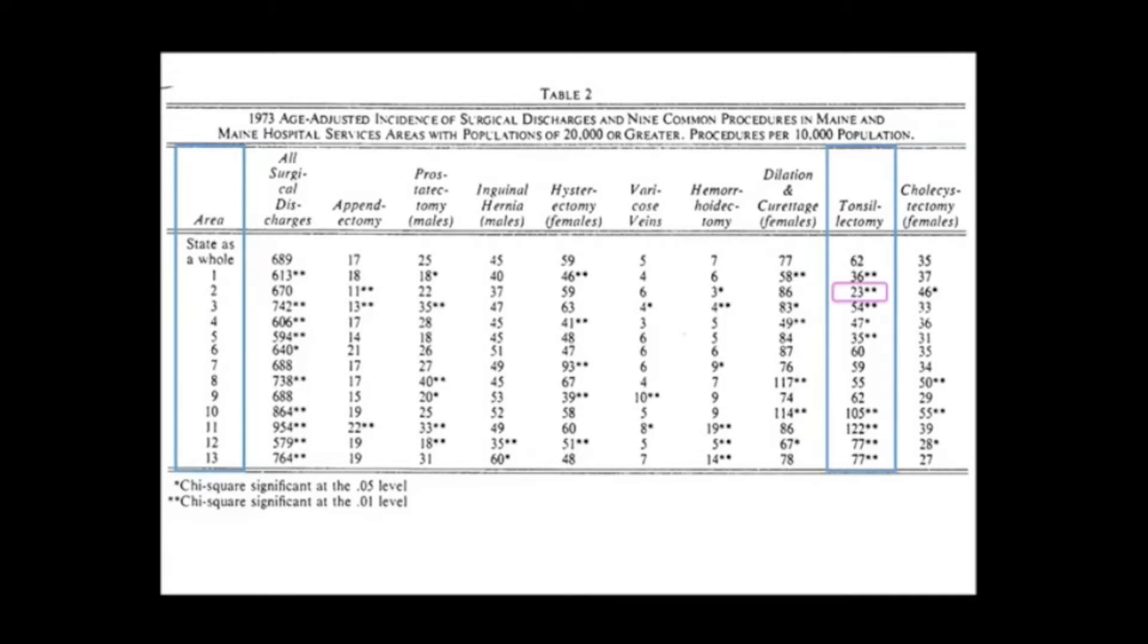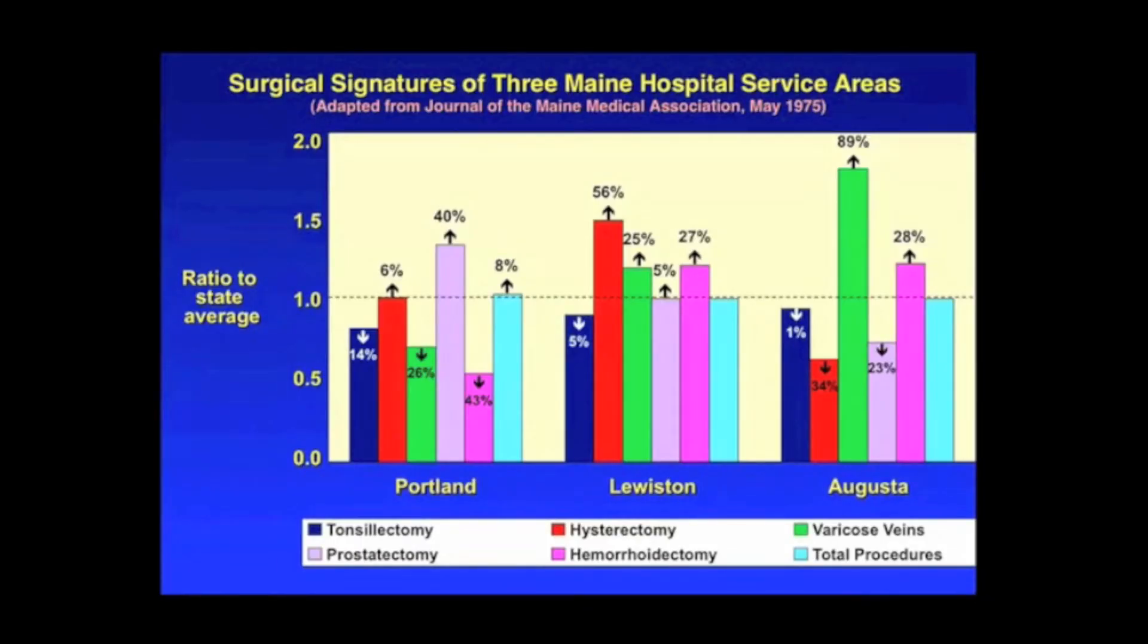In tonsillectomy, the low rate was 23 per 10,000. The high rate was 122 per 10,000. But you also found something else. Tell us about this graphic.